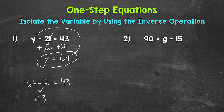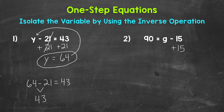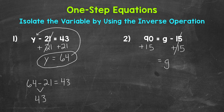Let's move on to number two, where we have 90 equals g minus 15. We need to isolate that variable of g. 15 is being subtracted from g, so we need to undo that subtraction by using the inverse operation. The inverse of subtraction is addition. So let's add 15 to the right side of the equation. Whatever we do to one side, we must do to the other, so let's add 15 to this side as well. On the right side, we are subtracting 15 and adding 15, so these 15s cancel out — they equal 0. So g is now isolated. g equals 90 plus 15, which equals 105.